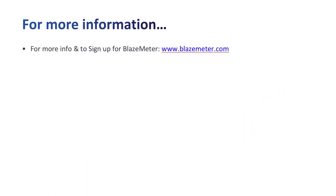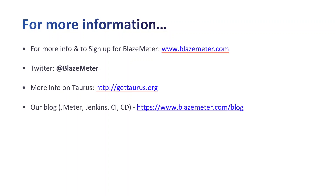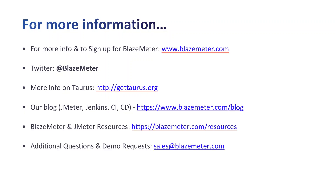For more information and to sign up for free for a BlazeMeter performance testing account, you can do so at www.blazemeter.com. You can also follow us on Twitter at BlazeMeter. For more information on Taurus and to install it, you can go to gettaurus.org. BlazeMeter's blog has a ton of information on JMeter, Jenkins, and other CI and CD tools — please visit us at blazemeter.com/blog. You can also visit our resources page with videos, tutorials, webinar recordings, and white papers at blazemeter.com/resources. For any additional questions or to request a demo from one of our performance engineers, please contact us at sales@blazemeter.com. Thank you very much, everybody — have a great day.